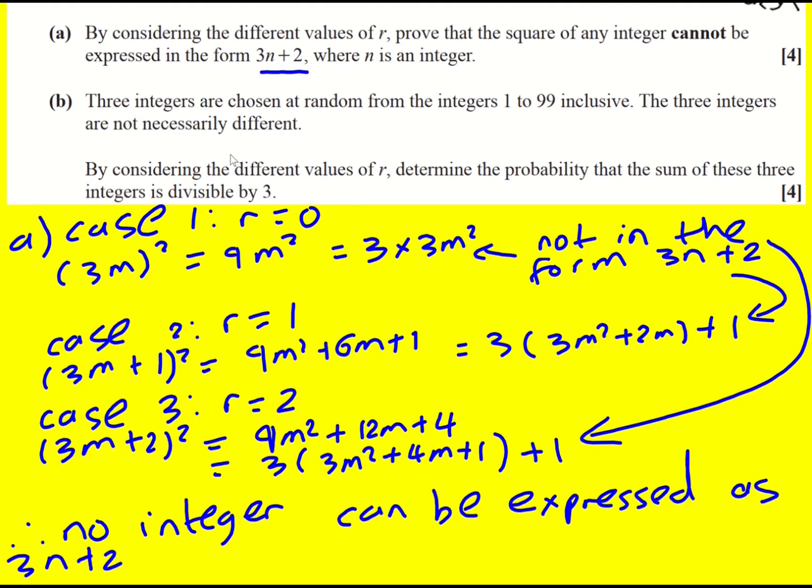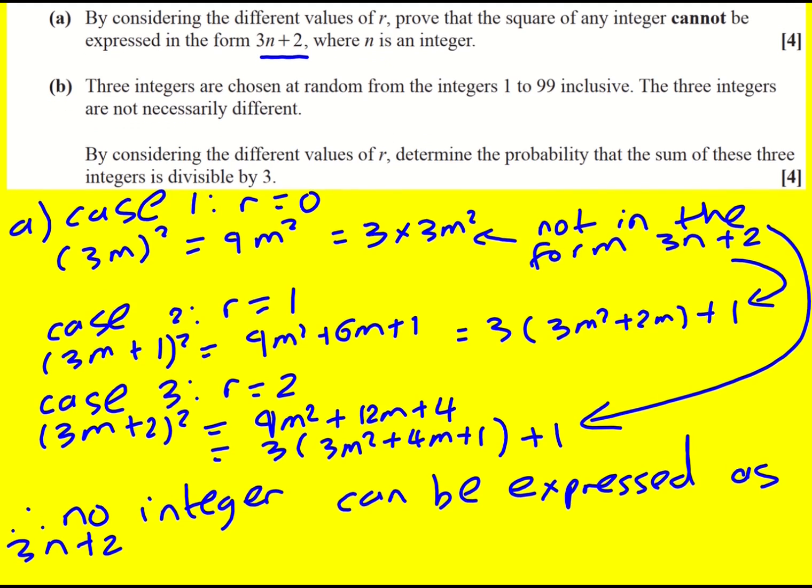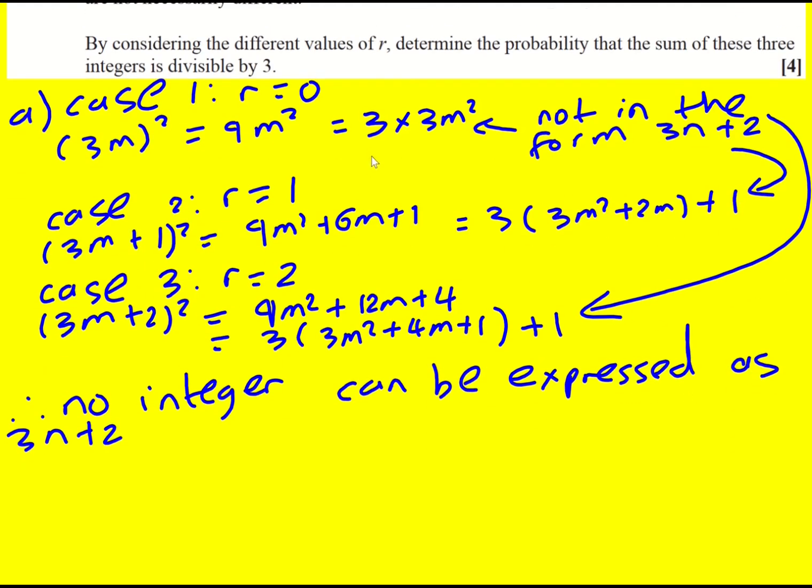Now, it says to consider the different values of r. So when I did this question, that's what I did. I looked at 1, 2, and 3. But a shout out to actually going straight for 3m plus r. And this is really powerful, especially if there are like 10 cases or something. If you can just do the general case, and then substitute r in, it can be a little bit easier.